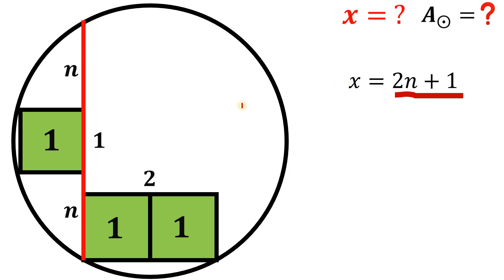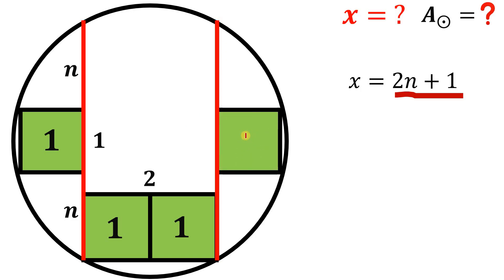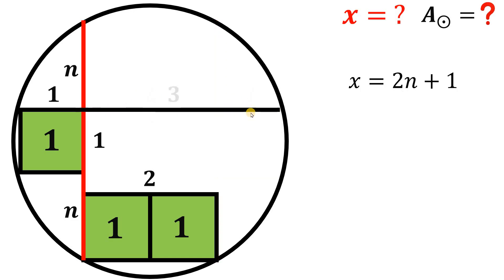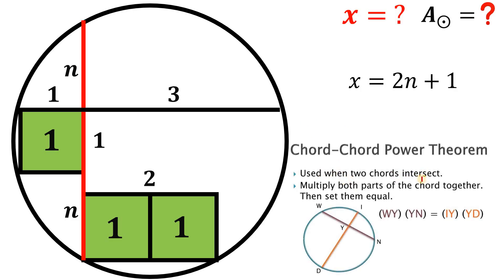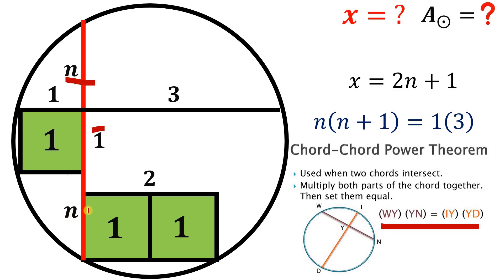To find x, we'll use the chord-chord power theorem. Using the symmetry of the figure, let's draw another red segment with equal segments, and draw a square with area of one square unit. Connecting one side of this square gives us two units, and adding one more gives a total of three units for that segment. This is enough to apply the chord-chord power theorem: when two chords intersect, multiply both parts of each chord and set them equal. So we have n times (n plus 1) equals 1 times 3.